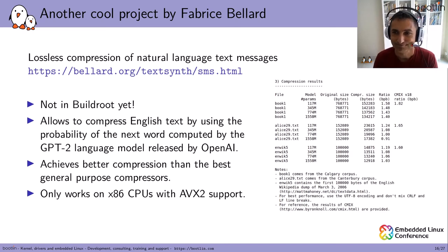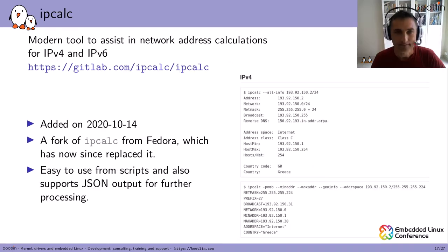The next one I discovered is ipcalc, a modern tool to assist with network address calculations for IPv4 and IPv6. It's a fork of the original ipcalc from Fedora with the same name but has since replaced it. It's easy to use from scripts because it generates variable descriptions, and it also supports JSON output for further processing.